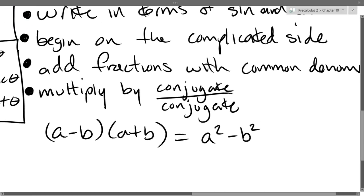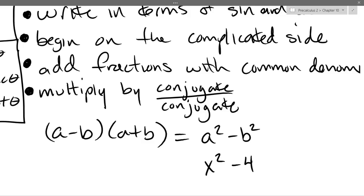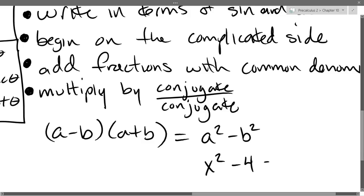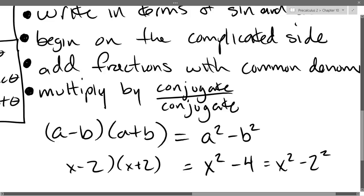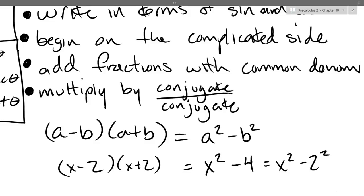You're going to see conjugates again and again, and knowing them will save you time. It won't always be obvious you have conjugates. For example, x² − 4 — that's not obviously x² minus something squared. But you can write it as x² − 2², and now you can easily factor it as (x + 2)(x − 2).